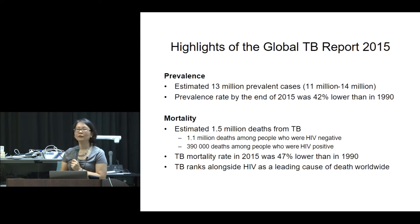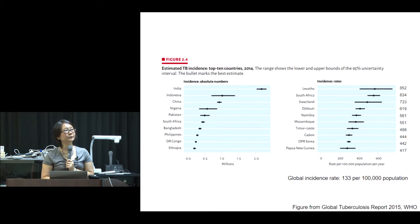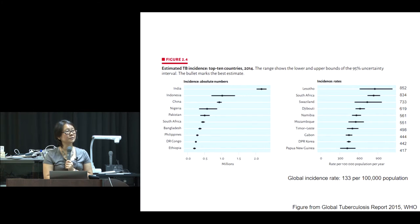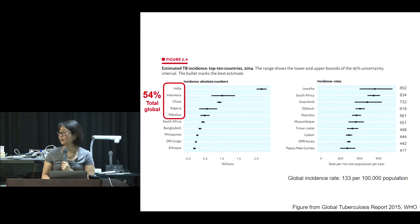There are an estimated 13 million prevalent tuberculosis cases. The prevalence rate by end of 2015 was 42% lower than in 1990. Estimated 1.5 million deaths from tuberculosis — nearly 400,000 among people with HIV. The tuberculosis mortality rate in 2015 was 47% lower than in 1990. Tuberculosis is now ranking alongside HIV as a leading cause of death worldwide. In terms of absolute numbers, the top five countries — India, Indonesia, China, Nigeria, and Pakistan — account for 54% of global tuberculosis cases. Adjusting for population size, Lesotho is the worst affected, with more than 800 cases per 100,000 population versus the global average of 133.